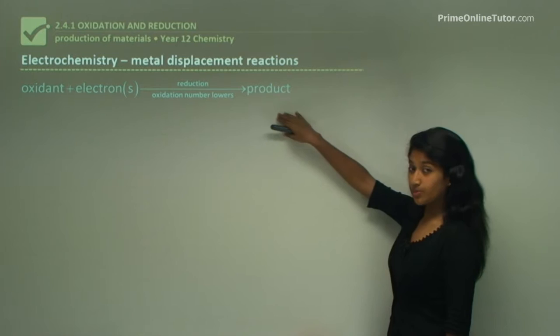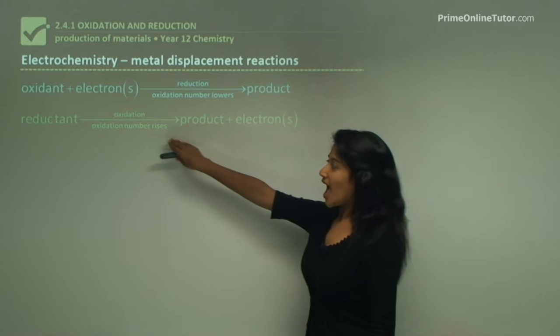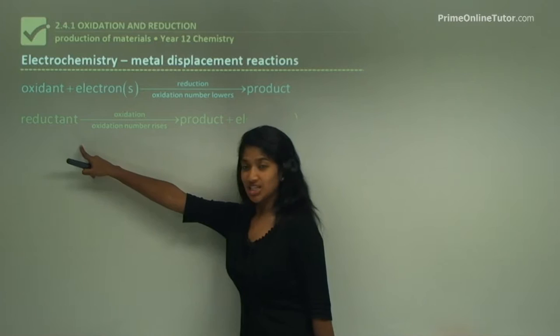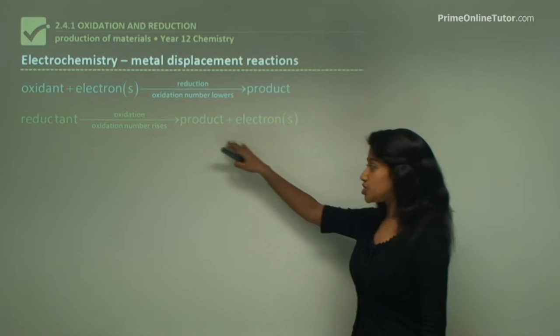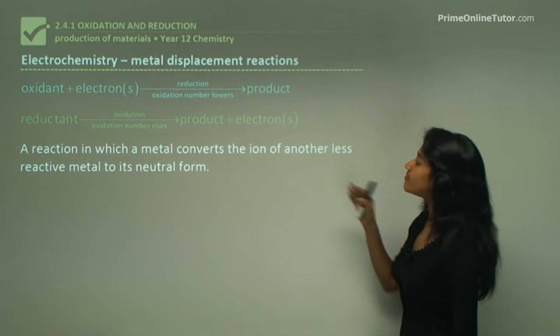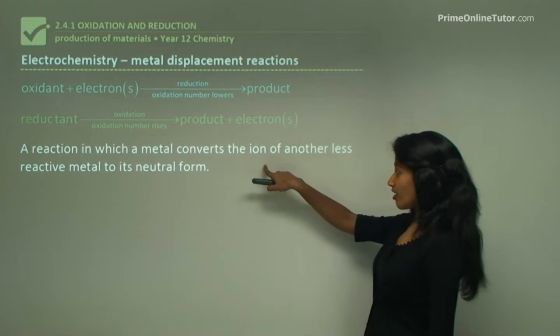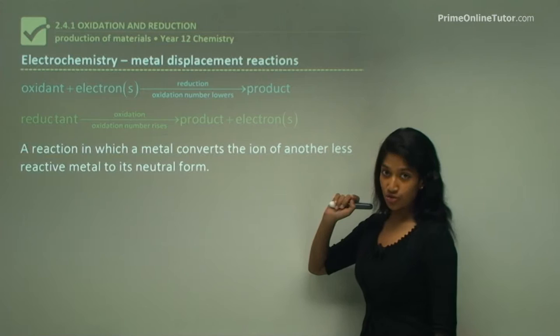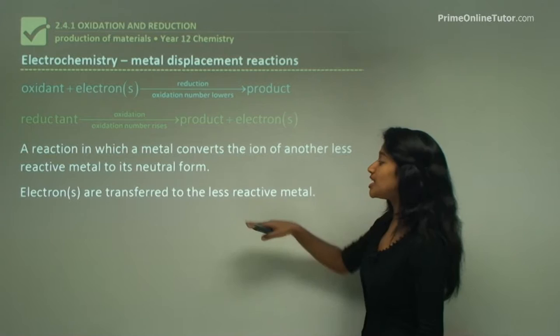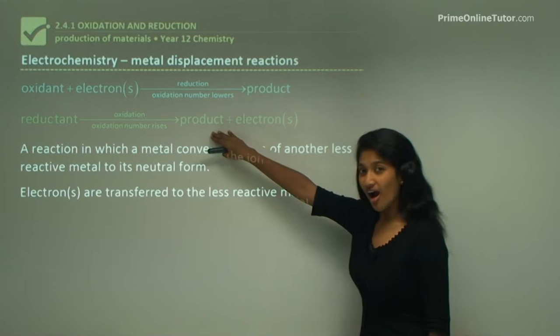This reaction is an oxidation reaction. The reductant would undergo oxidation and in this reaction the oxidation number rises. The reductant's oxidation number rises to form a product and during this process it releases an electron. So a metal converts the ion of another less reactive metal to its neutral form in a redox reaction. Electrons are transferred to the less reactive metal - the more reactive metal undergoes oxidation, producing its ion and an electron.